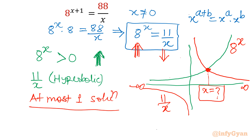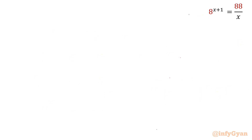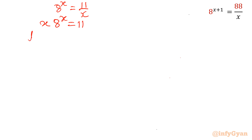Let's find that solution. Our equation is 8^x = 11/x. Multiply both sides by x, so x · 8^x = 11. Now take ln on both sides.